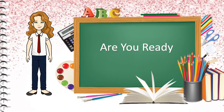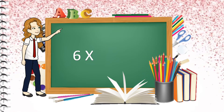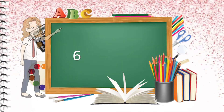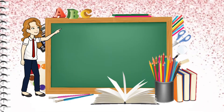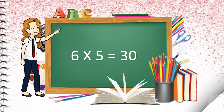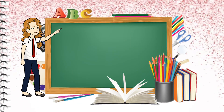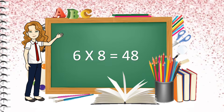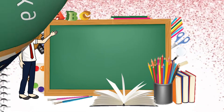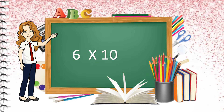Are you ready? Six ones are six, six twos are twelve, six threes are eighteen, six fours are twenty-four, six fives are thirty, six sixes are thirty-six, six sevens are forty-two, six eights are forty-eight, six nines are fifty-four, six tens are sixty.